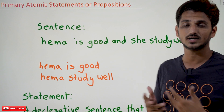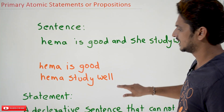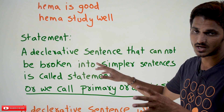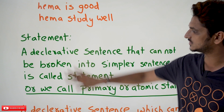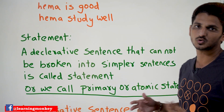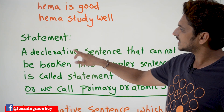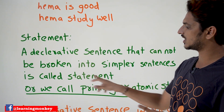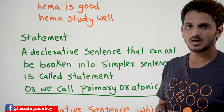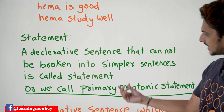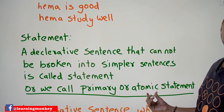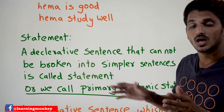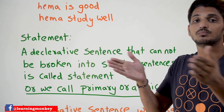Now with this knowledge, we are going to understand what statement means. A statement is a declarative sentence. For it to be a statement, it has to follow two conditions. First condition: a declarative sentence that cannot be broken into simpler sentences is called a statement. We simply call it a statement, or a primary statement, or an atomic statement. If you take any declarative sentence, that sentence cannot be divided into simpler sentences.